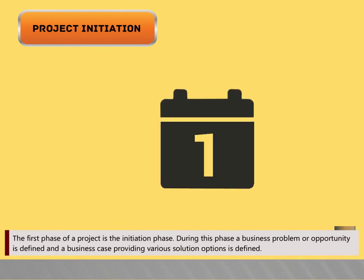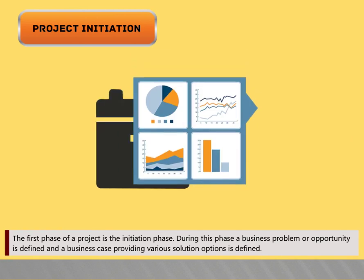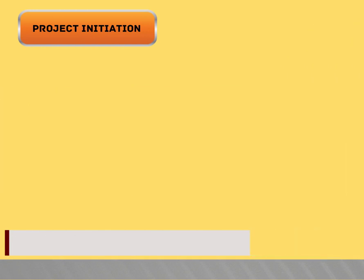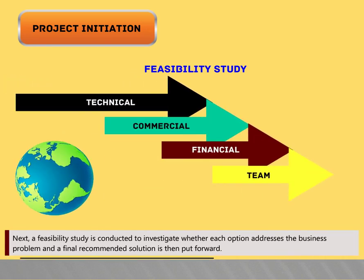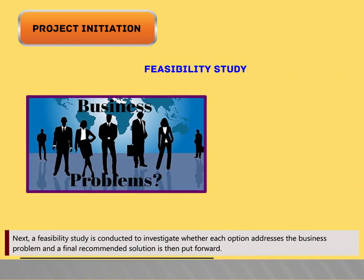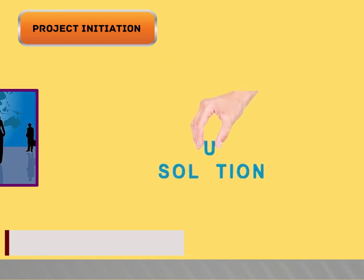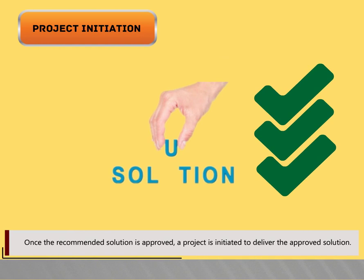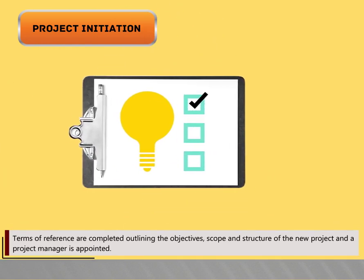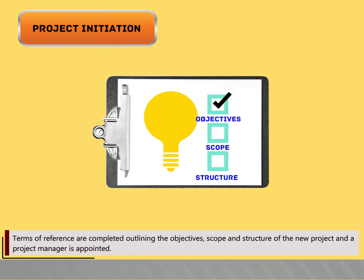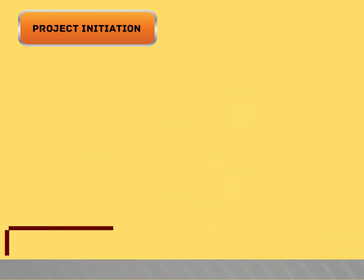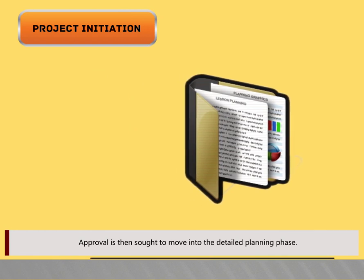The first phase of a project is the Initiation phase. During this phase, a business problem or opportunity is defined and a business case providing various solution options is defined. A feasibility study is conducted to investigate whether each option addresses the business problem and a final recommended solution is put forward. Once the recommended solution is approved, a project is initiated to deliver it. Terms of reference are completed outlining the objectives, scope and structure of the new project, a project manager is appointed, a project team is recruited, and a project office environment is established.